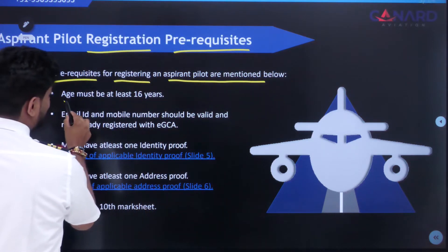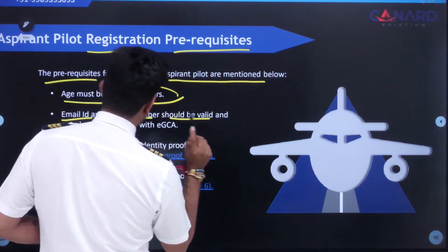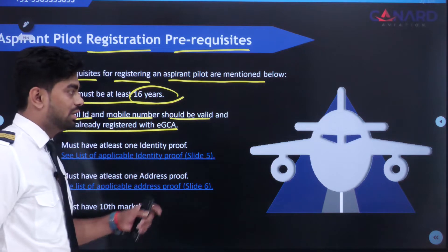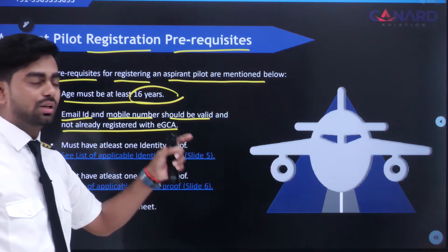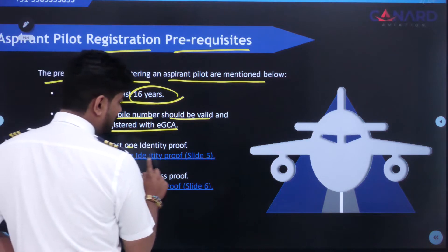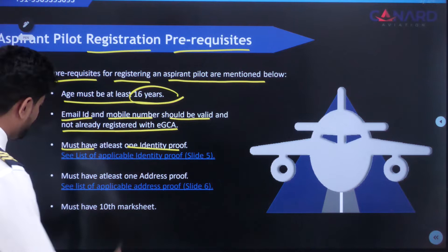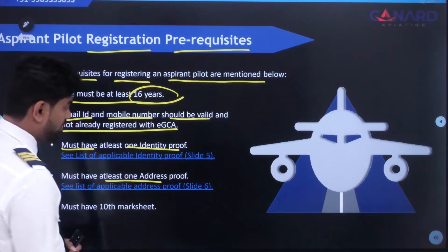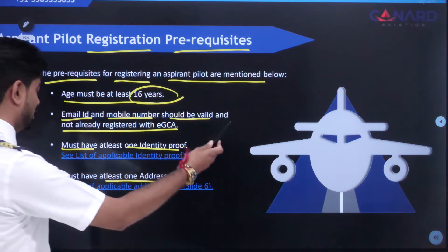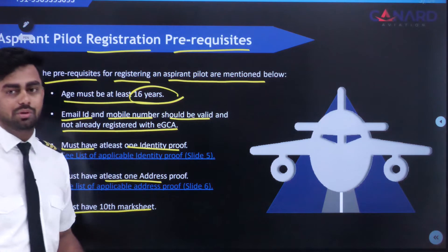The prerequisites for registering as an aspirant pilot are: age must be at least 16 years; email ID and mobile number should be valid and not already registered with EGCA — it should be a fresh, new number and new ID; must have at least one identity proof; must have at least one address proof; and must have a 10th marksheet as the minimum educational qualification.